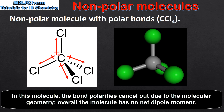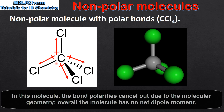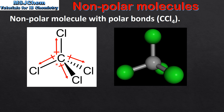These vector arrows can be used to show bond polarity. Even though it has four polar bonds, overall carbon tetrachloride is a non-polar molecule. The molecular geometry of carbon tetrachloride is tetrahedral. This means that the bond polarities cancel out and the molecule has no net dipole moment.